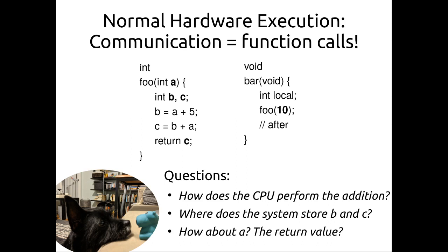We see functions foo and bar. Foo is a simple function with local variables B and C, takes argument A, and returns C, which is some math on the input. Bar calls foo with the argument 10. Think about: how does the CPU perform the addition? Where are the actual values being computed? Where does the system store B and C — the local variables? Where is A stored? Where is the return value stored? Pause and think about where all these things are.